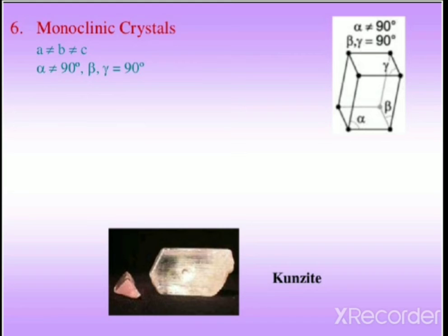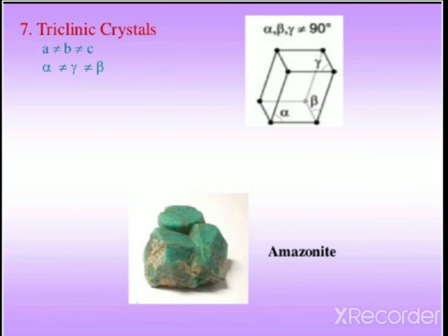Monoclinic crystals consist of the primitive and the end-centered Bravais lattices, with all edge lengths unequal, and alpha ≠ 90° but both beta and gamma equal to 90°. Examples include monoclinic sulfur and hydrated sodium sulfate. Triclinic crystals include only the primitive lattice, with all edge lengths unequal and all angles not equal to 90°. Examples include potassium dichromate (K₂Cr₂O₇) and hydrated copper sulfate.